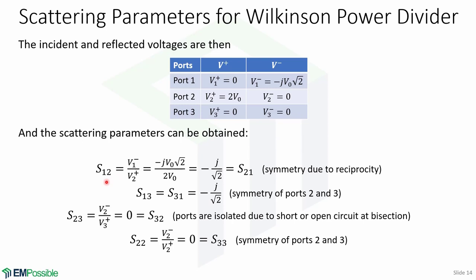The incident and reflected voltages from this configuration are shown in a table, where V+ is the incident voltage and V− is the reflected voltage. At port 1 we have no incident voltage but a reflected voltage of minus j V0 square root of 2. At port 2 we have an incident voltage of 2V0 and no reflected voltage. At port 3 we have no incident and no reflected voltage. From these, S12 equals V1− over V2+ which is equal to minus j over square root of 2, and by reciprocity S21 equals S12. By symmetry of ports 2 and 3, S13 and S31 also equal minus j over square root of 2. S23 equals 0 and S32 equals 0, meaning ports 2 and 3 are isolated.